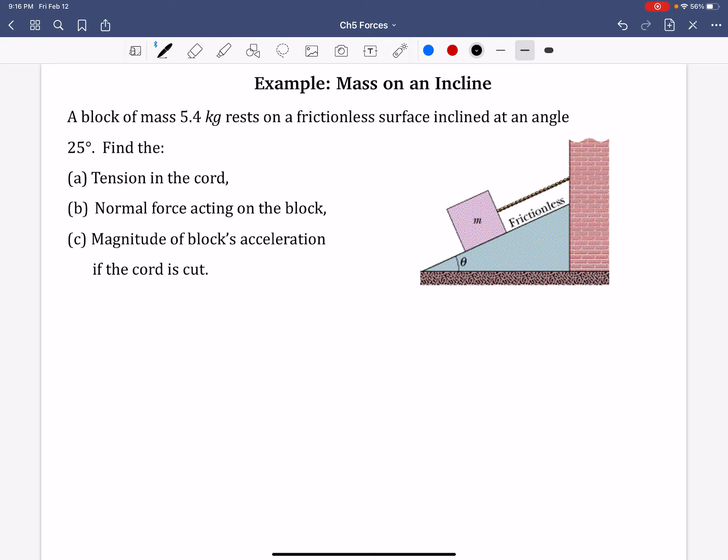So remembering back to last video, we want to draw a free body diagram for this problem. The first step is to draw our object as a dot. Next, write out all forces coming from this dot outwards. I'm going to try and keep the angles or the orientations the same. That's tension, T.